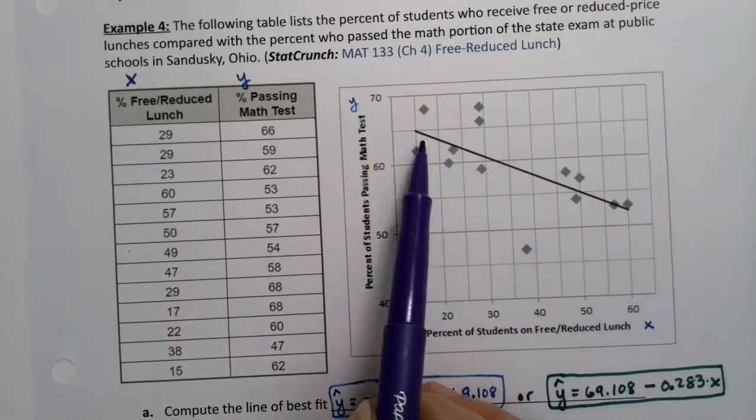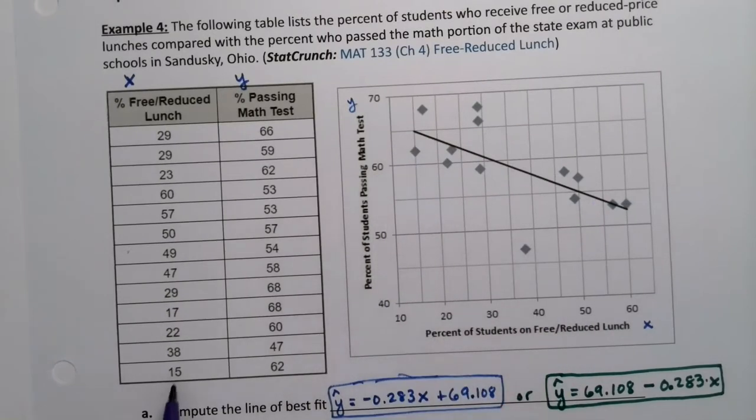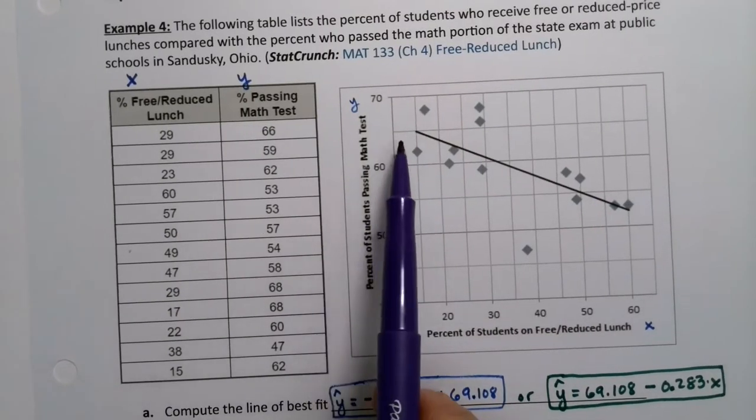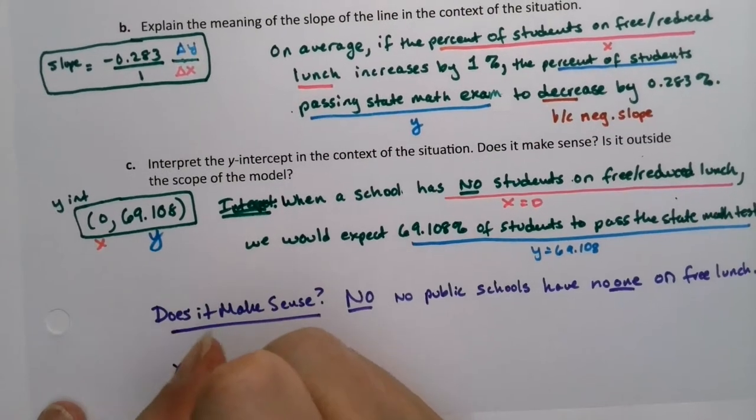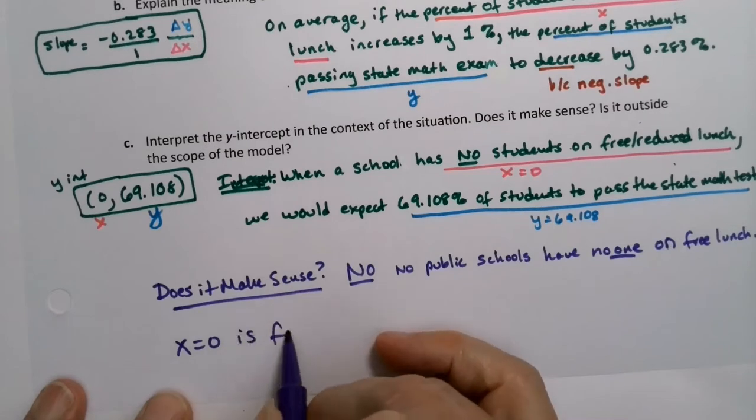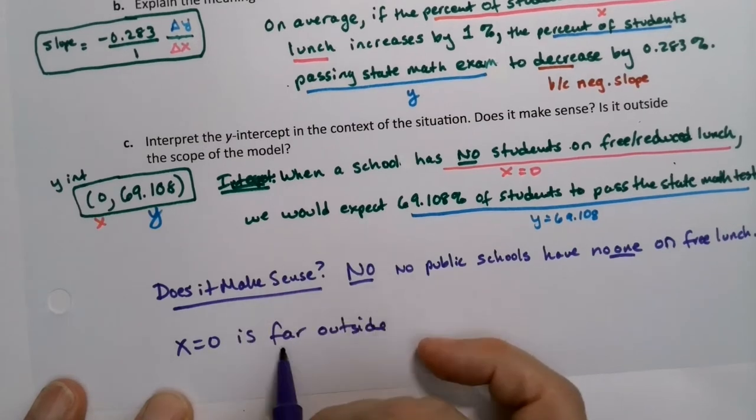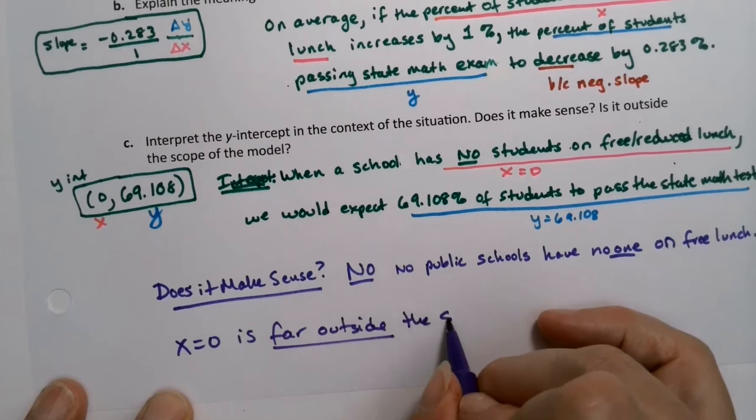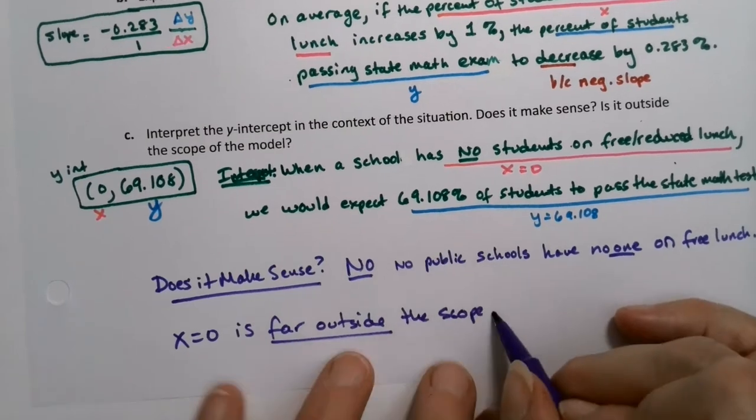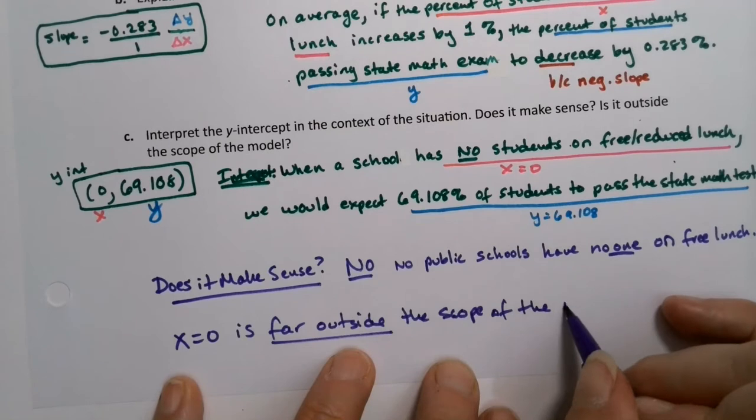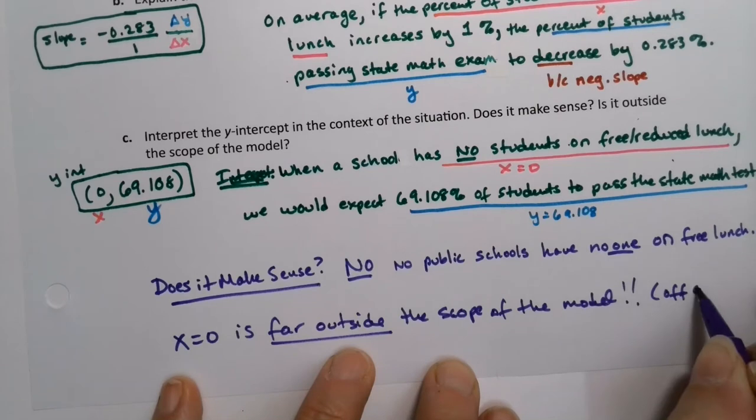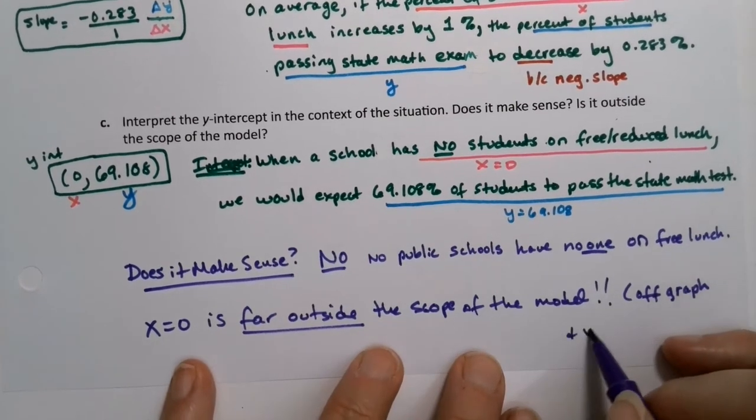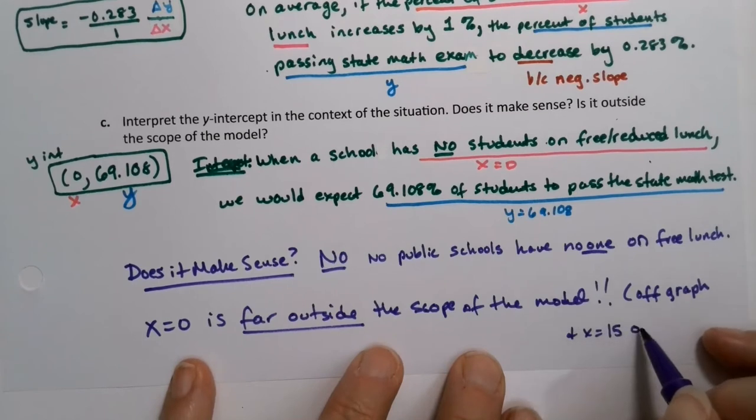And this is far outside the scope of the model. Look at your data set. Your lowest data point is right here, which is 15. 0 is way outside of that, well off the graph. So x equals 0 is far outside the scope of the model. It's off the graph for starters. And x equals 15 is our lowest data point.